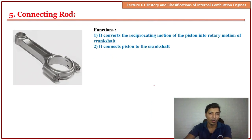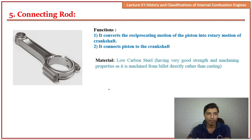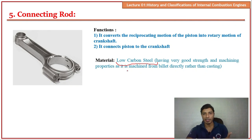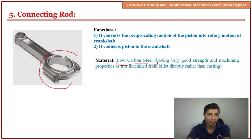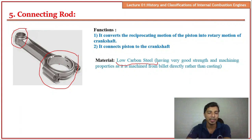The connecting rod is a simple component machined from billet. The material used is low carbon steel due to its excellent machinability and strength. The small end of the connecting rod is attached to the piston via the gudgeon pin, and the big end is attached to the crankshaft at the crank pin.